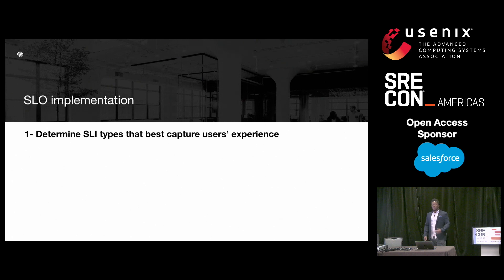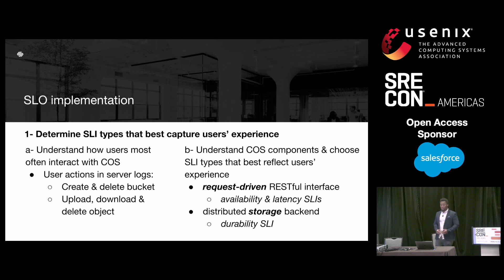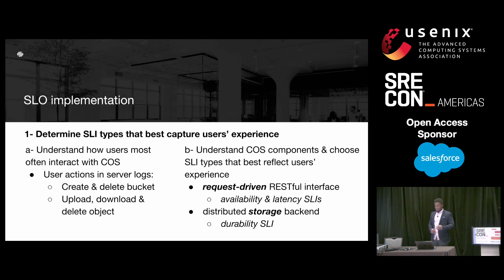For step one, we wanted to determine the SLI or metric types that best capture our users' experience. For this, we did two things. A: understand how users most often interact with the service. This was straightforward as we just looked at our object storage server logs to determine the most common actions performed by our users. These included things like create and delete bucket, upload, download, and delete object. B: we needed to understand the major components that make up our service so as to choose the performance metric types that best reflect our users' experience. Our object storage service is made of two main components: a request-driven RESTful interface for accessing objects, essentially an HTTP server, and a distributed storage backend for storing objects.